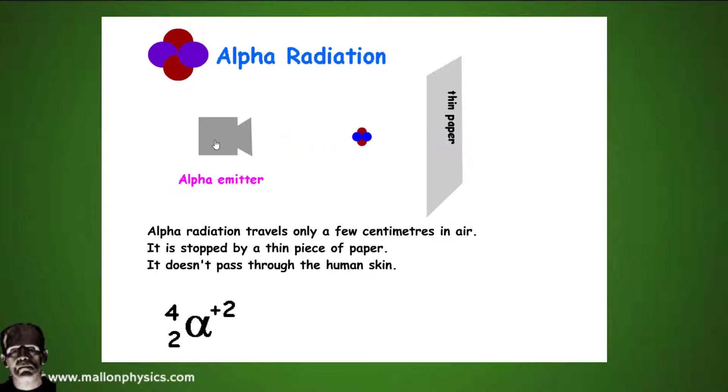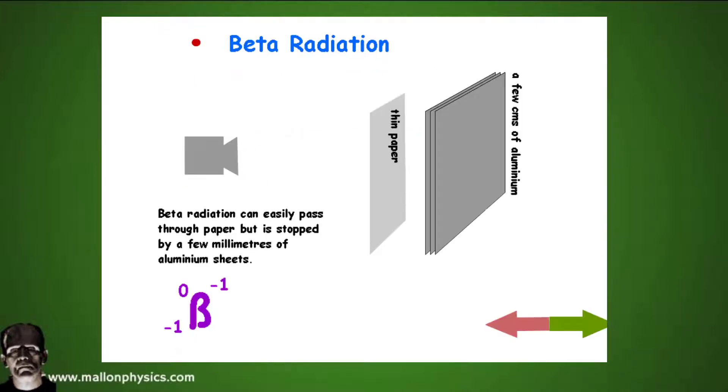Beta radiation can easily pass through a few centimeters of air and it can easily pass through thin paper, but it's stopped by a few centimeters of thin metal like aluminum sheeting.